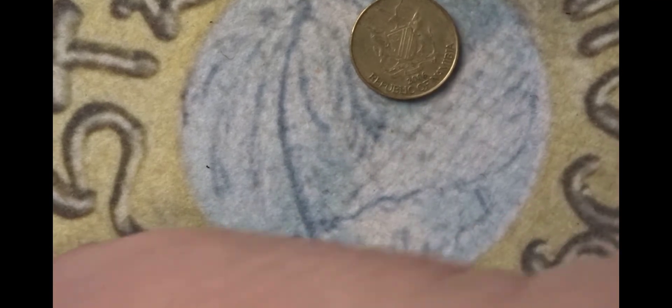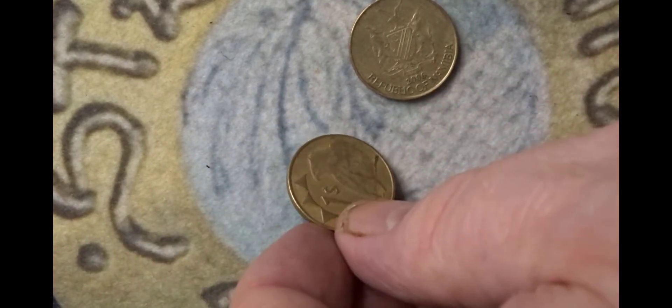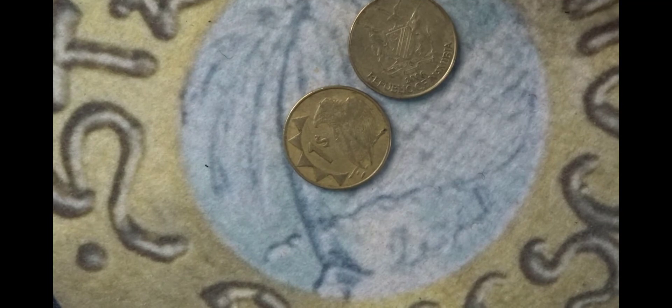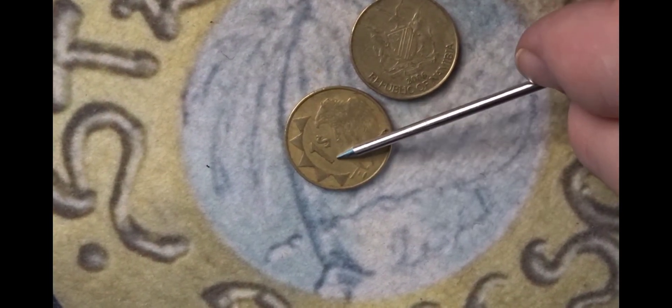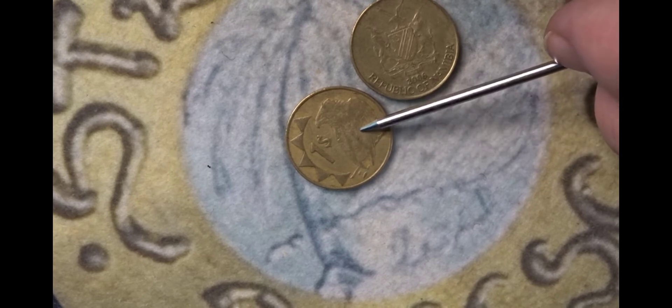And last but not least, we have two coins from Namibia. You have the Namibian coat of arms here. Then on the reverse you have the one dollar with an eagle, a perched eagle.